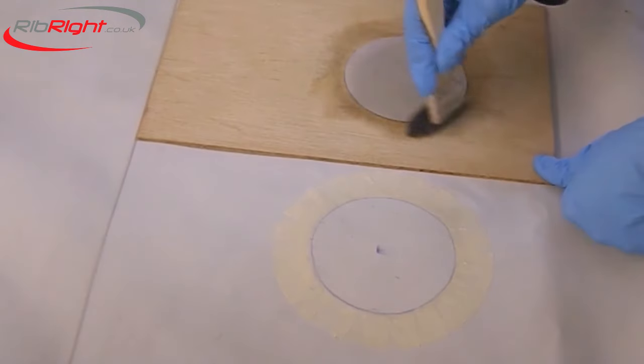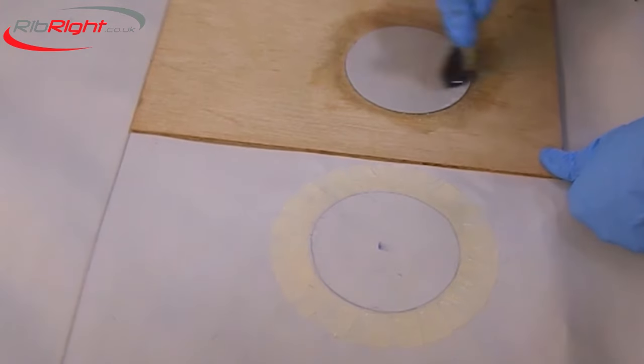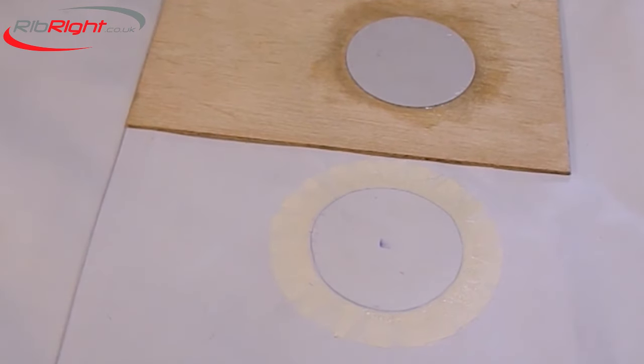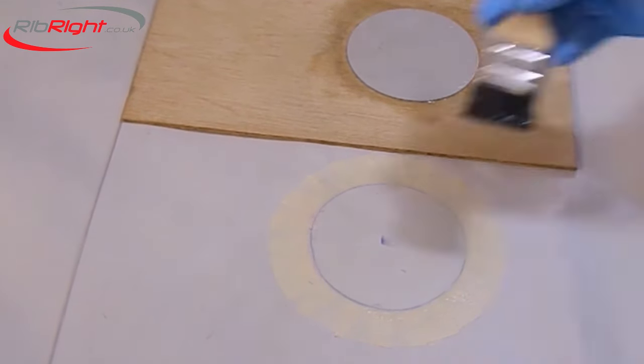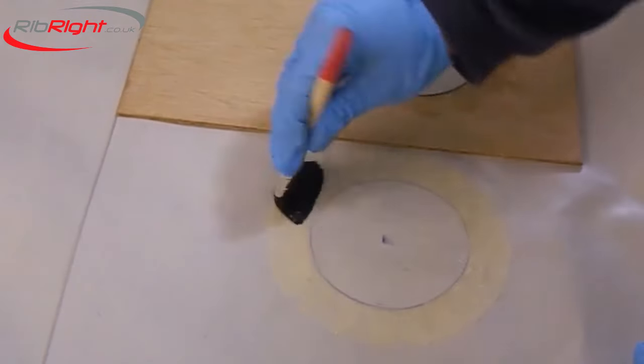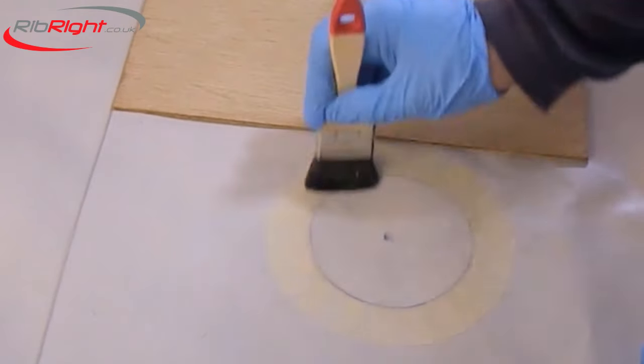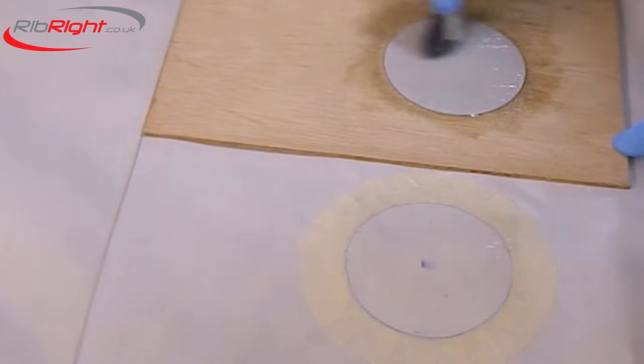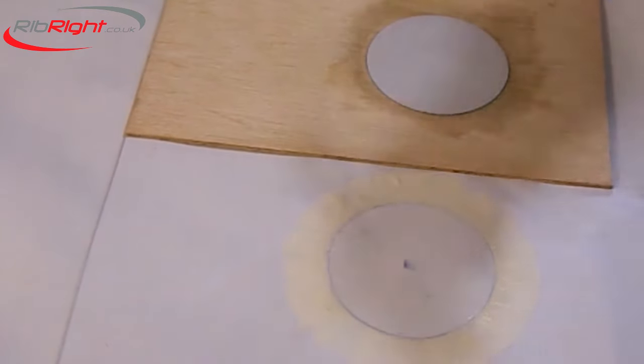Spread a thin, even layer of adhesive on both the patch and the boat. This is your priming layer. Leave this for 30 minutes to cure. Then add a further coat and leave for an additional 10 minutes.